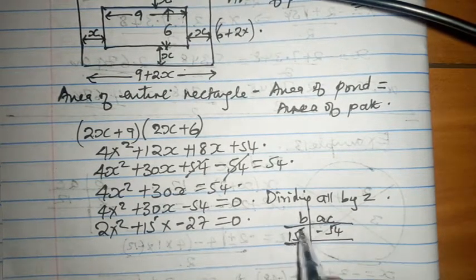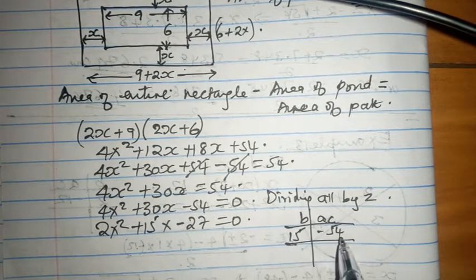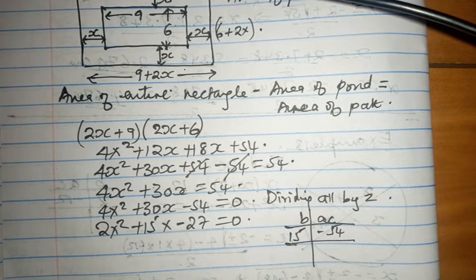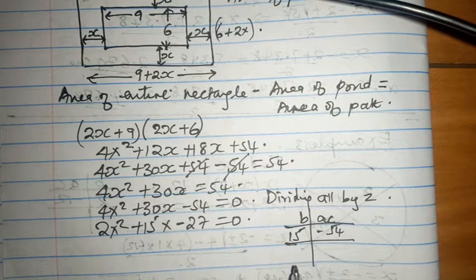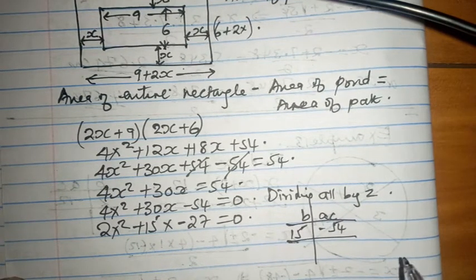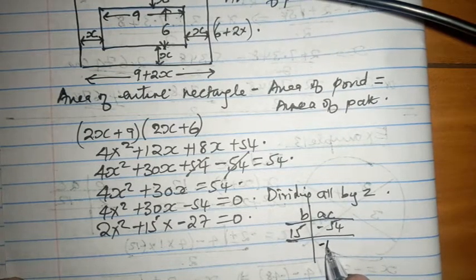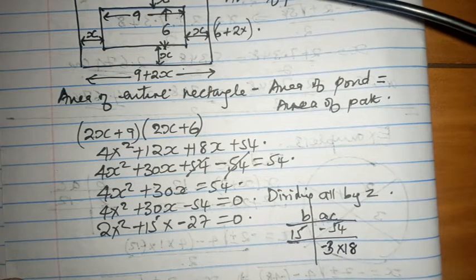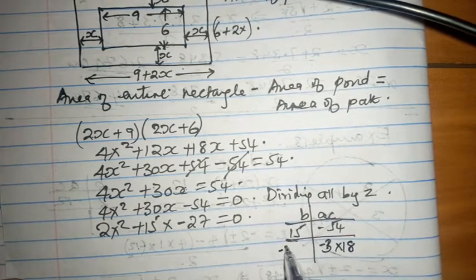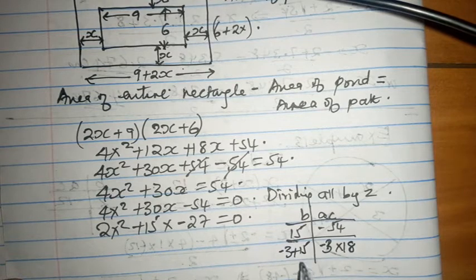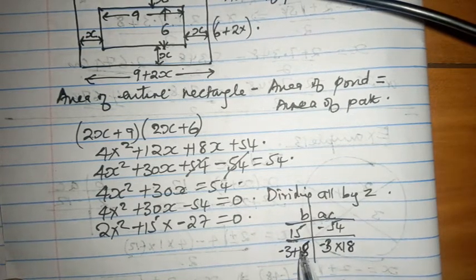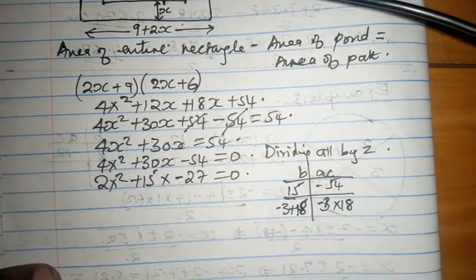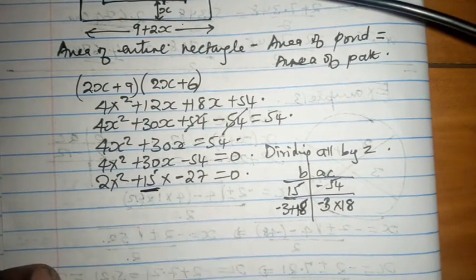Hint, the two numbers have one number with negative sign and the other one with positive sign. And the number with the positive sign is bigger than the one with the negative sign. We could talk about minus 3 times 18, which gives us minus 54. Minus 3 plus 18, which gives us positive 15. And those are the factors that we acquire.